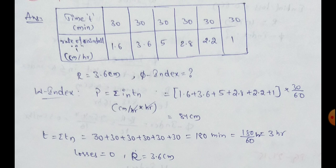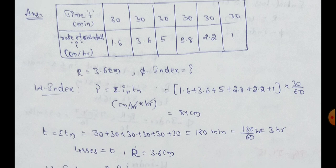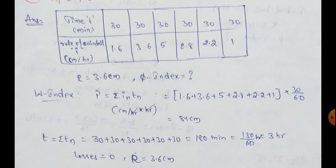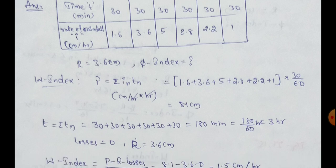So, let's see. Here, precipitation, rate of rainfall, 1.6, plus 3.6, plus 5, plus 2.8, plus 2.2, plus 1. Every 30 minutes, 30 minutes by 60 minutes, 30 by 60. So, total, we have 8.1 cm.